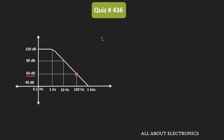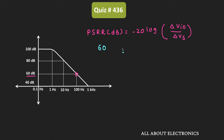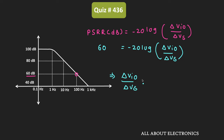First, let us convert this decibel value of PSRR into voltage form. We know that the PSRR in decibels is given as minus 20 log of delta Vio — that is, the change in input offset voltage — divided by delta Vs. The value of PSRR at 100 Hz is 60 dB, so: 60 = −20 log(delta Vio / delta Vs), which gives delta Vio / delta Vs = 10^(−3), or 1000 µV per volt. That means the PSRR is equal to 1 mV per volt.